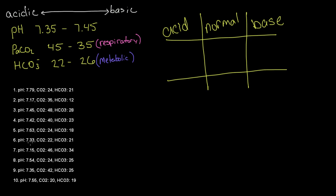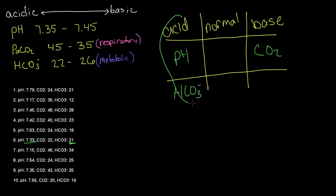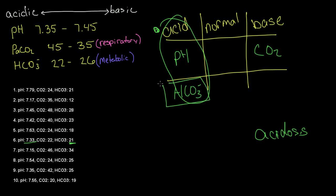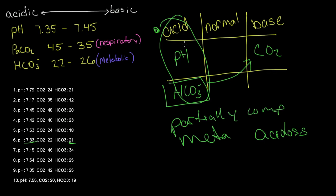Number six: pH is 7.33, which is acidic, so it goes in the acid column. CO2 is 22 — it's basic, so CO2 goes over here. HCO3 is 21, acidic — it goes in the acid column. This is our tic-tac-toe — acidosis, because it's in the acid column. Our parameter that made it up is metabolic, so this is metabolic acidosis. And our opposite parameter is partially compensating because it's in the opposite column.